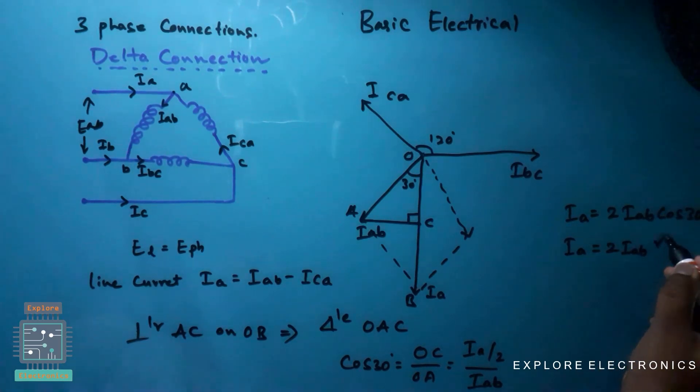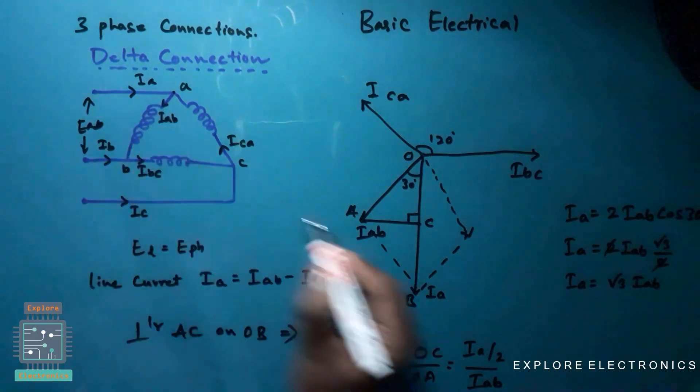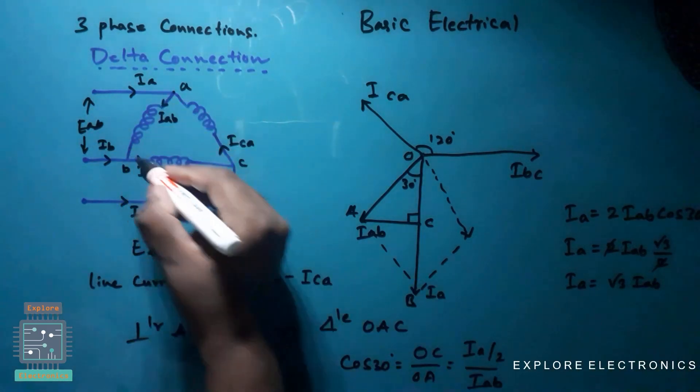So I can write it as Ia is equal to 2 into Iab. What is cos 30? Cos 30 is again root 3 divided by 2. This 2 and 2 get cancelled. Ia will be equal to root 3 times Iab.